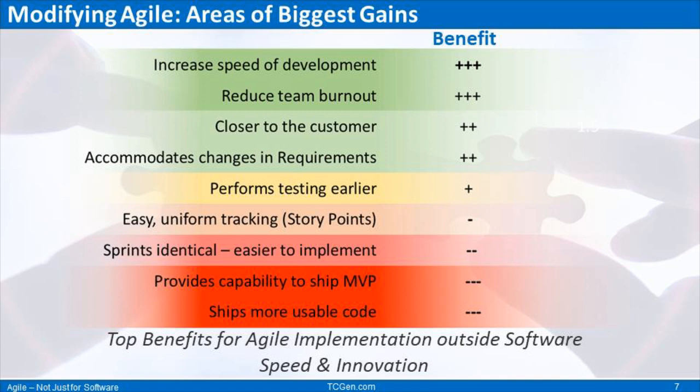We took a third-party study of the benefits that software teams and IT got while doing Agile, and looked at it with a lens of tangible products rather than software, grading their impact and benefit. The top four — relating to things like hitting schedules, reducing burnout, being closer to the customer, and improving innovation — are worthy of considering Agile in your organization. The red items further down the list are less relevant, but those first four are very important and well worth it.